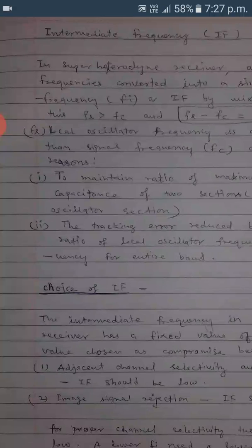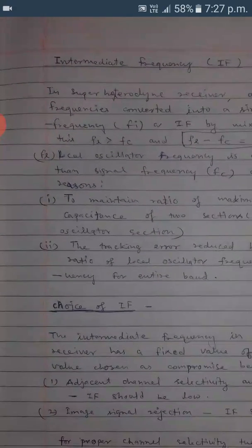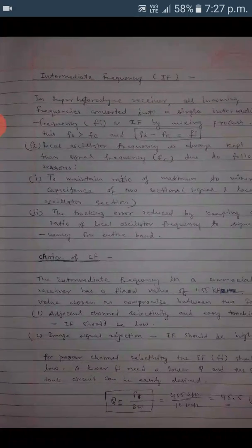Normally, the local oscillator frequency FL should be greater than the signal frequency FC for two reasons: first, to maintain the ratio of maximum to minimum capacitance of the two sections — signal and local oscillator; and second, the tracking error is reduced by keeping a constant ratio of local oscillator frequency to signal frequency for the entire band.